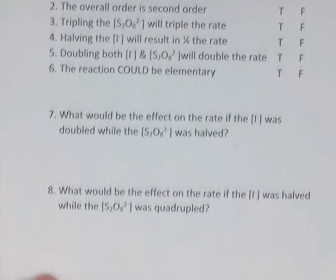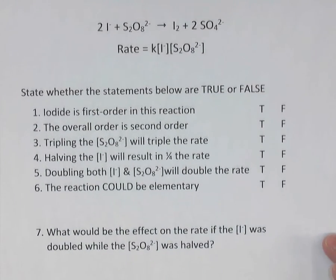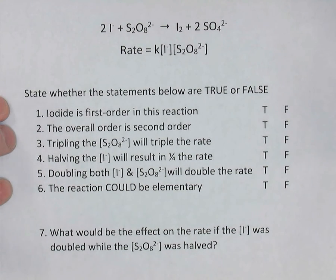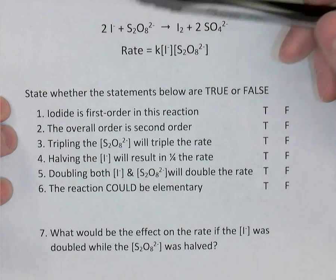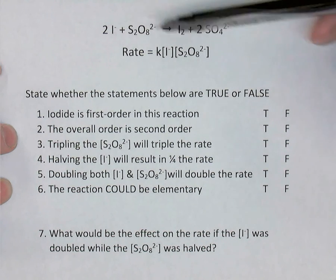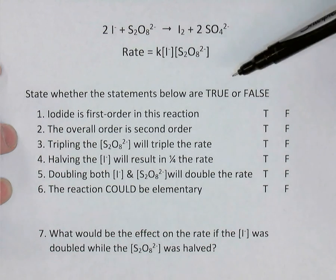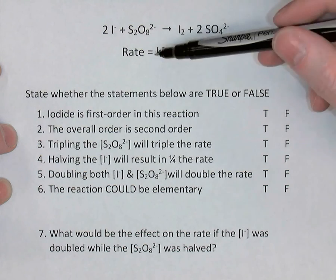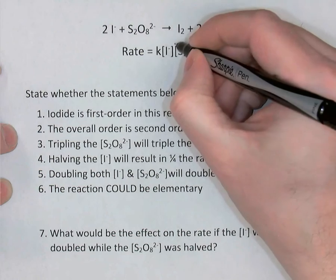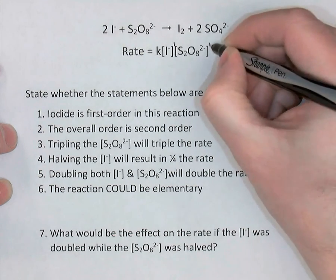If you were just looking at that for the first time, you could now pause the video for the second example and try these yourselves. Otherwise, stay with me and we'll explain them together. We have another example: iodide ions reacting with S₂O₈ forming products, and the rate law is given. I notice right away that the orders are both ones.